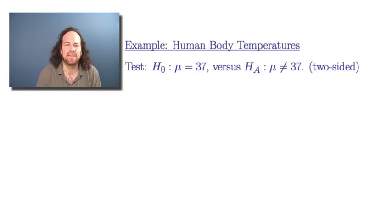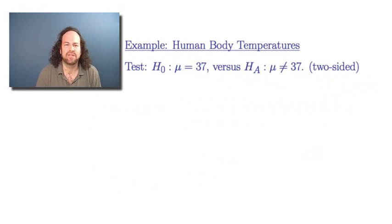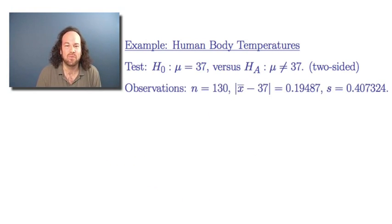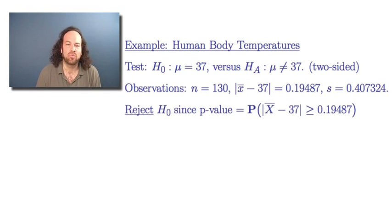For a second example, let's remember the human body temperatures data. We were testing whether it's true that the normal human body temperature is equal to 37 degrees Celsius, comparing that null hypothesis to the alternative hypothesis that mu is not equal to 37. This was a two-sided test. We had 130 different human observations, and the observed value of the difference between the mean we got minus 37, our hypothesized value, was 0.19487. We also had an estimate for the standard deviation S.